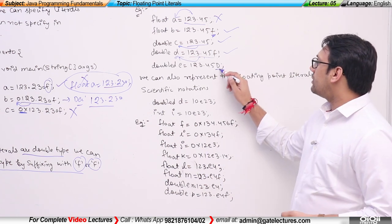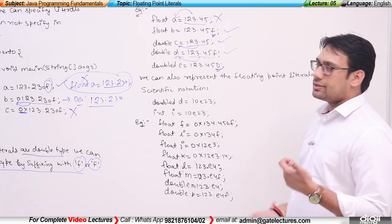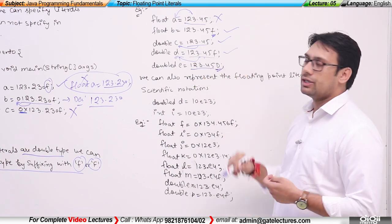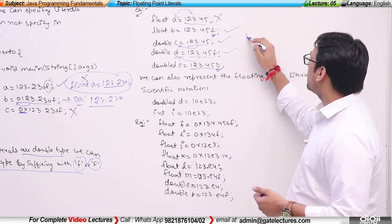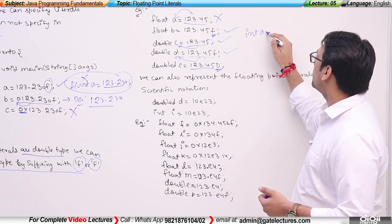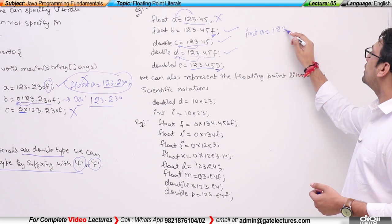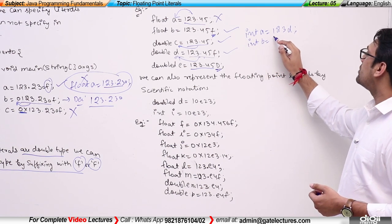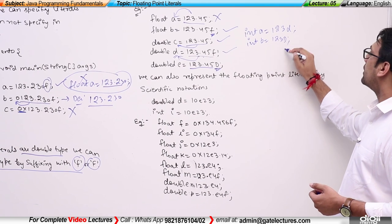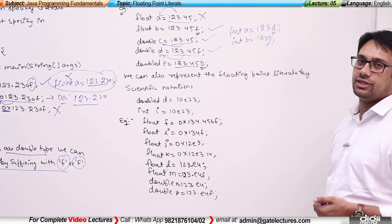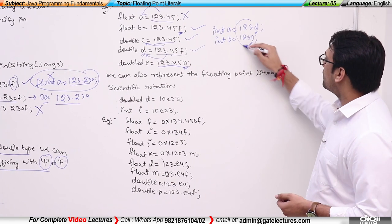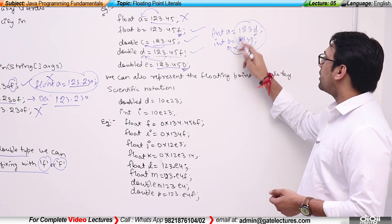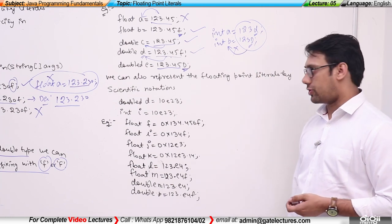You can also specify with capital D or small 'd' that a number is specifically a double. So 123.45d means it is a double number. However, if I write int a is equal to 123d or int b is equal to 123D, because these numbers end with 'D' they are now double numbers, and you cannot store a double number in an integer variable — so this is wrong.